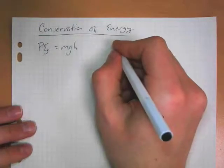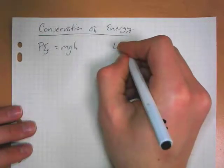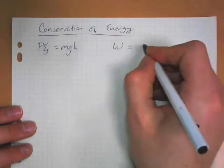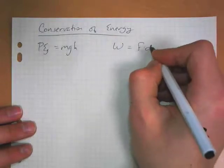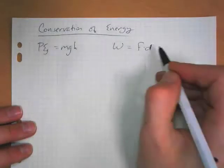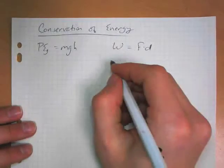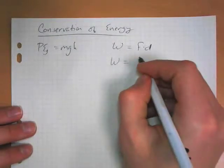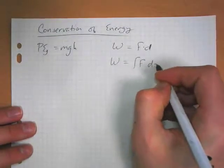When we did spring force, we looked at kind of an average value. We know that work is equal to force times distance. There's a cosine theta in there, but we'd say the force is in the same direction. Well, really, work is actually more like an integral of force with respect to distance.